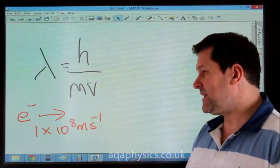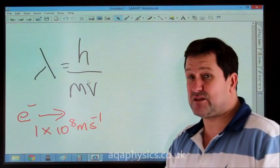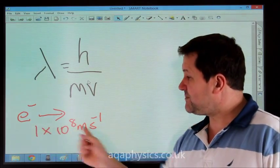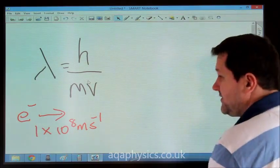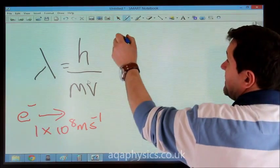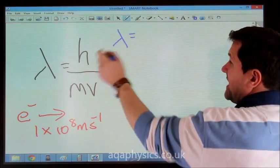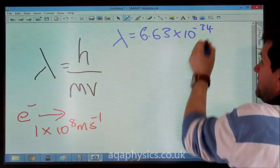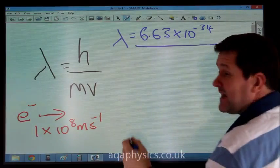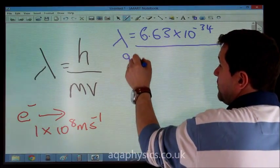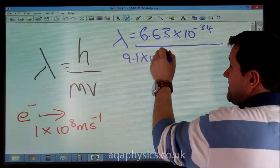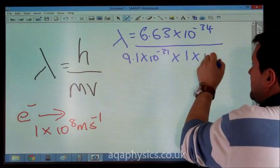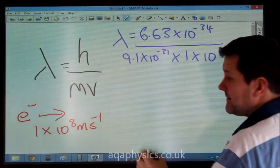So very simply then, if we've got an electron travelling at 1 times 10 to the 8 metres per second, neglecting any dilation due to the speed it's going, we could work out that the wavelength of the electron would simply be lambda equals h, which is 6.63 times 10 to the minus 34, divided by the mass of an electron, which is in our formula sheet, which is 9.1 times 10 to the minus 31, times its velocity, which in this case is 1 times 10 to the 8 metres per second.